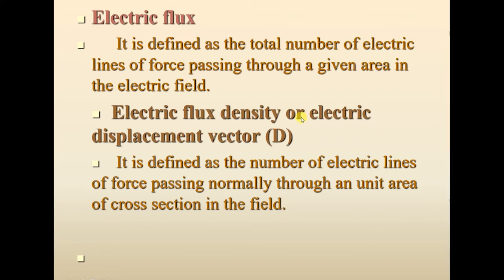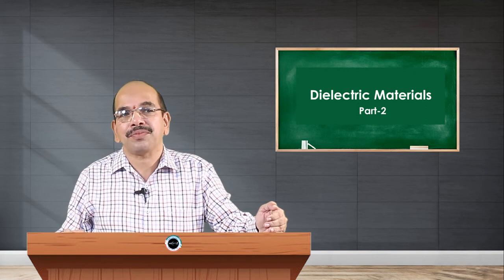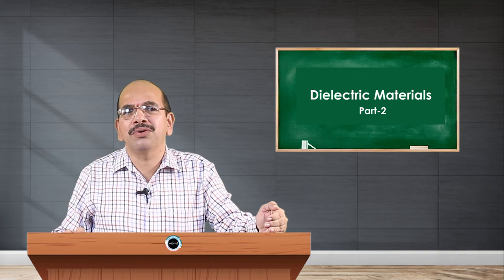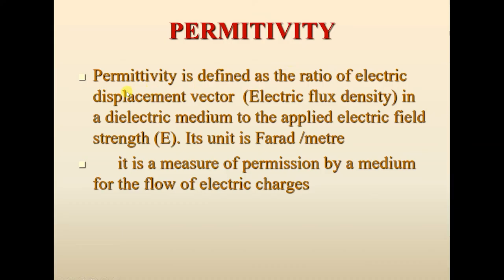Both electric flux and electric flux density depend on the strength of the field or strength of the electric charge, and they can be used to measure the strength of the field. Now let us move to another parameter known as permittivity. The name itself indicates its meaning — permittivity is defined as the ratio of the electric displacement vector or electric flux density in the dielectric medium to the applied electric field strength, and it is measured in farads per meter.